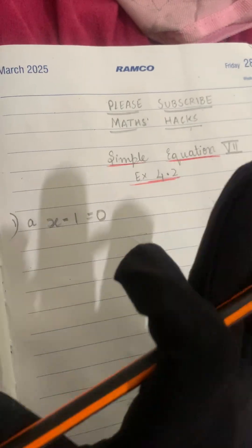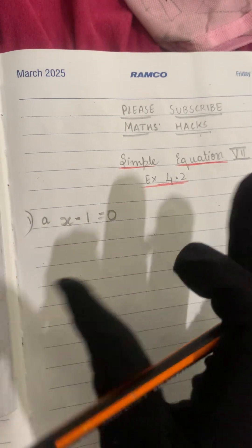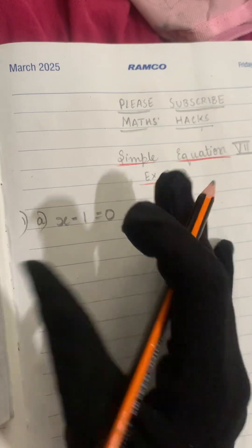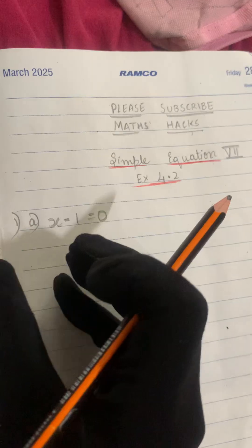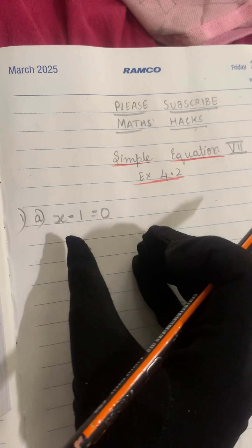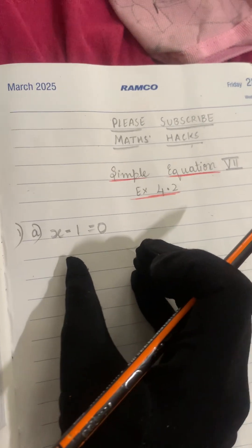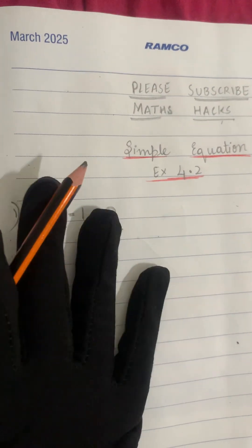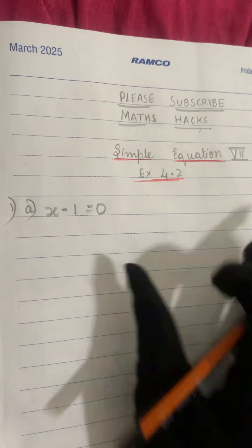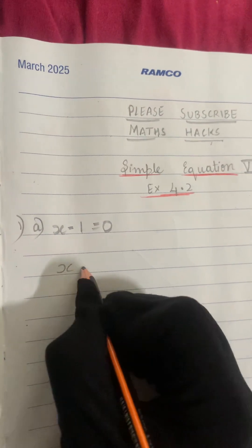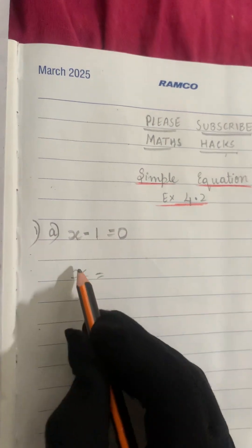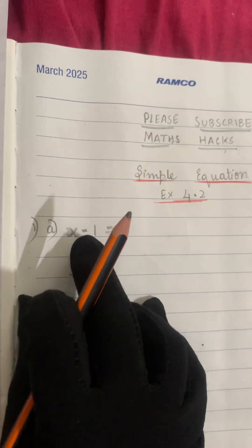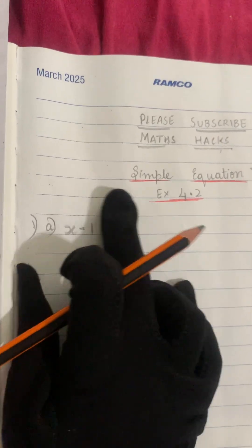Instead of using the transpose method, I'll tell you an easy, simple method. The idea is: x minus 1 is equal to 0. You have to understand that variables should be on one side and numbers on another side. Let's take the left-hand side as the variable side and the right-hand side as the number side. So x is our variable side; left-hand side is the variable side. Here we have 0, and 0 is a number. So we will shift the number to the numbers side.